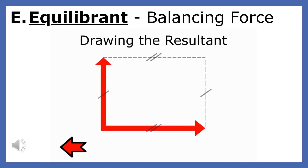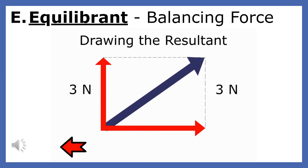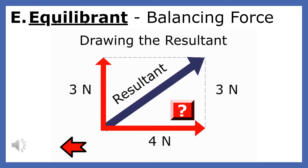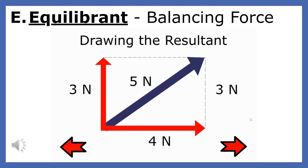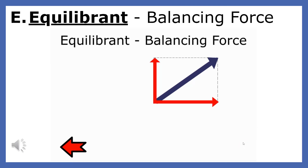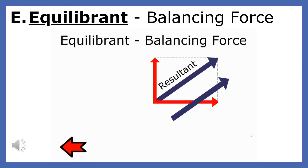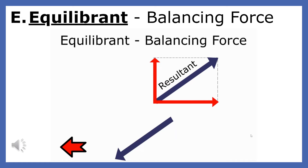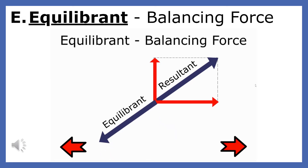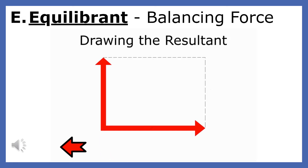When two or more forces act on a body, the single force that will balance these forces is called the equilibrium. The equilibrium, or balancing force, is equal in magnitude to the resultant of the forces, but pointing in the exact opposite direction.